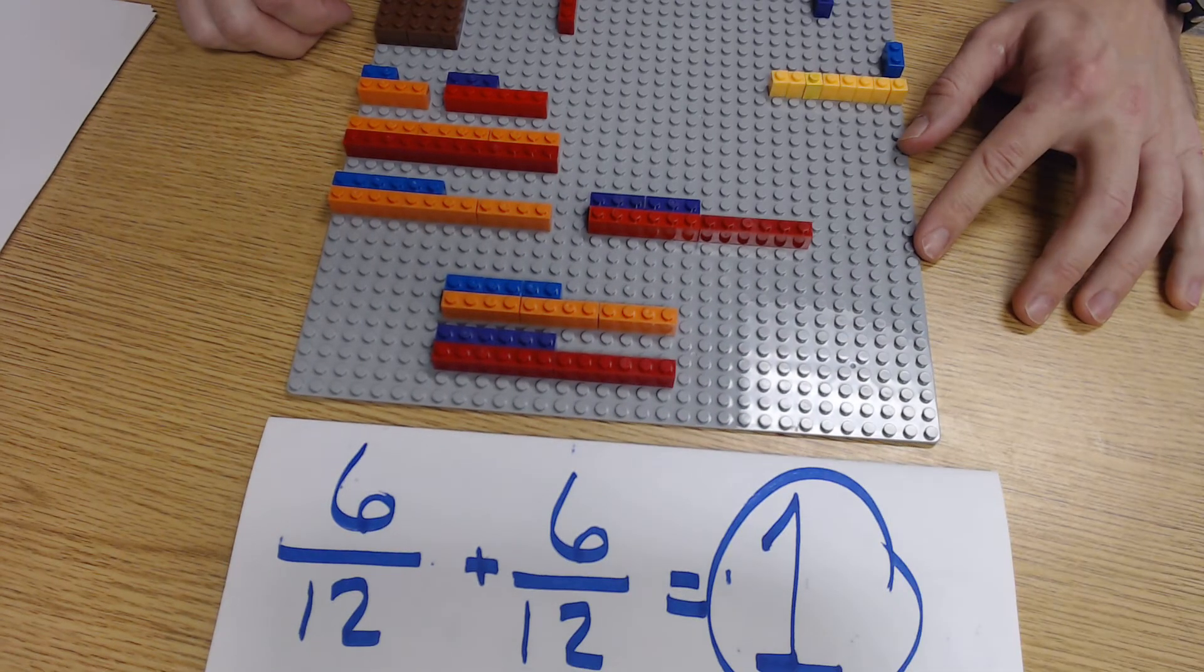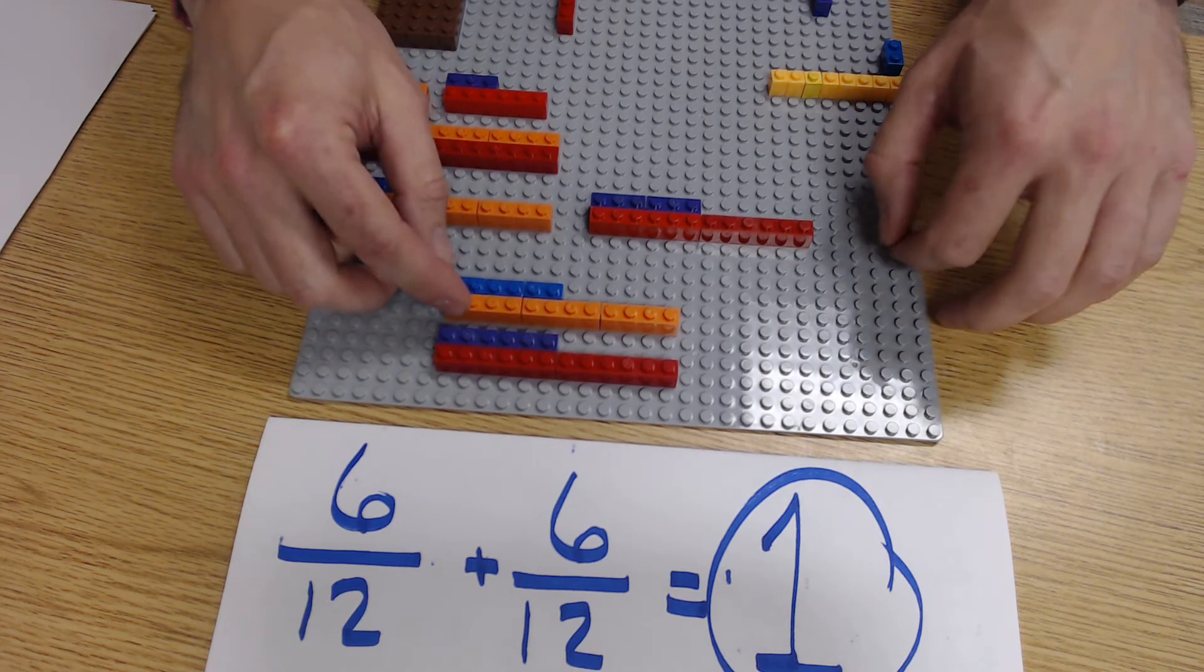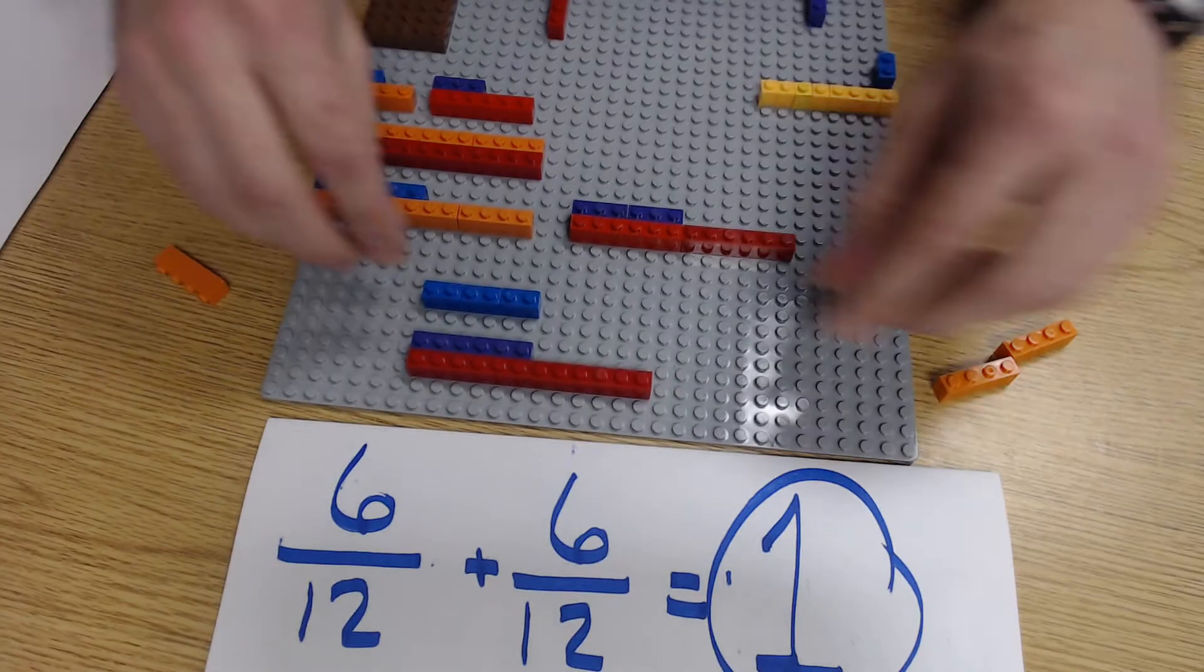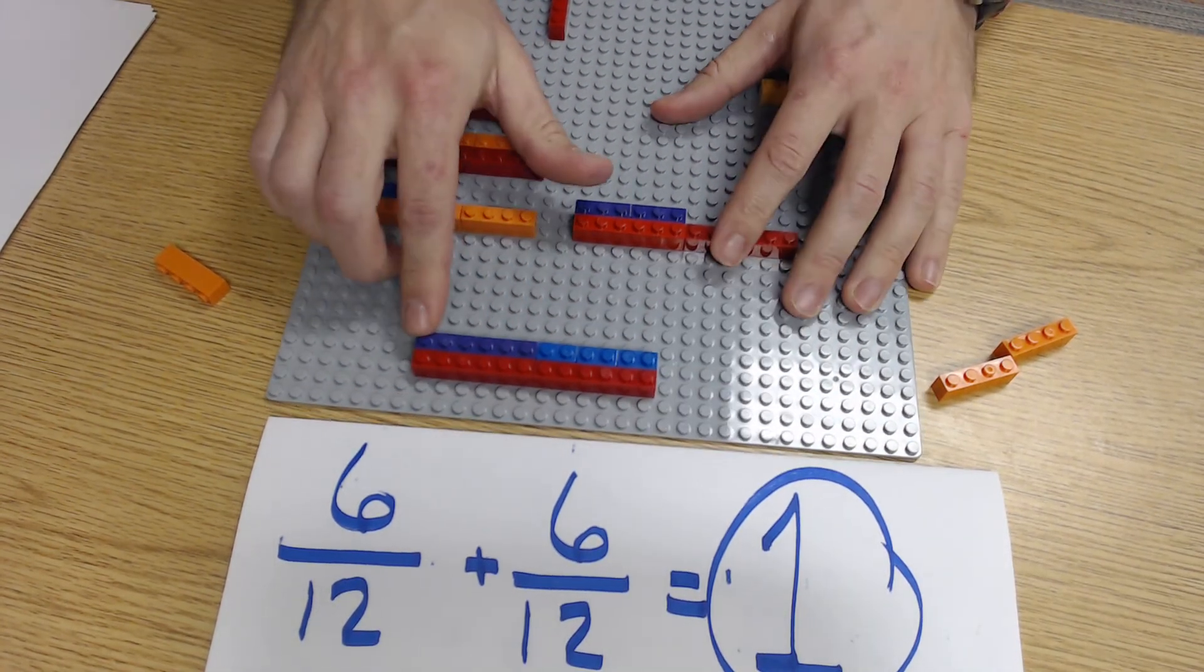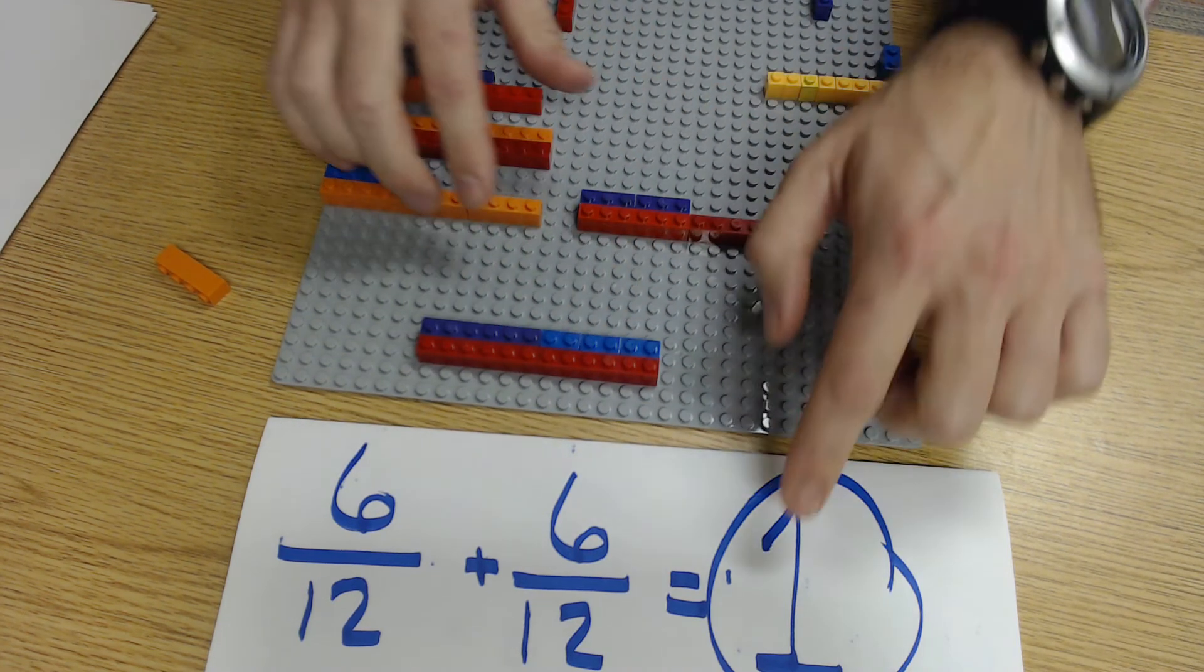And then you can ask students, what can I see with these? I'm going to add these two together. These are both 12s. I'm just going to simply, you can have them take one away and add it right there. And what do I have? I have 12 twelfths, which would equal one whole.